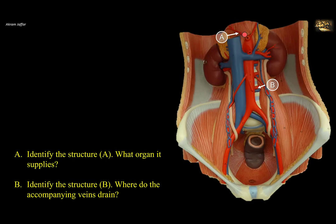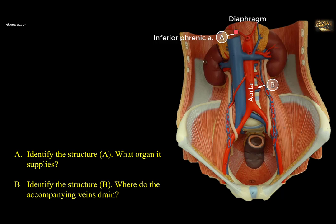Identify structure A, what organ it supplies, and identify structure B, where do the accompanying veins drain. Structure A is the inferior phrenic artery. These are two small vessels. They arise immediately inferior to the aortic hiatus in the diaphragm. You can see the hiatus here. This is the abdominal aorta. As the name indicates — phrenic — it supplies the diaphragm.